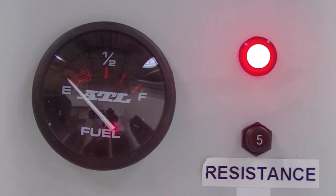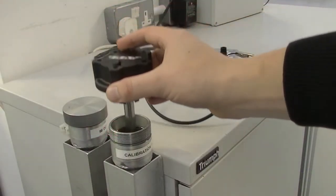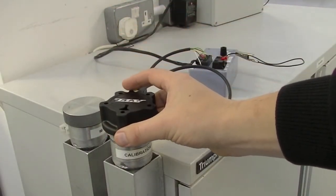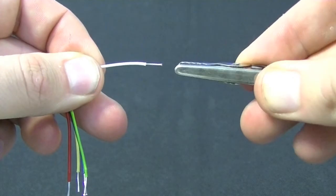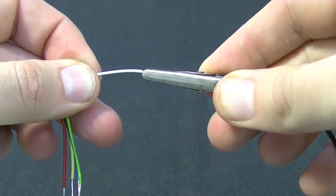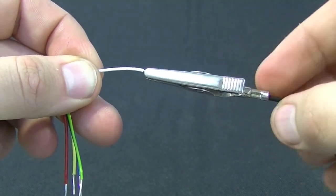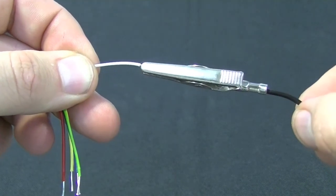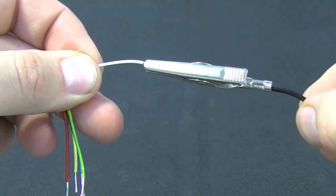Next we calibrate the full point. Fully submerge the sender tube in fuel. To calibrate the full point, connect the white calibration wire to the ground and hold for 10 seconds.